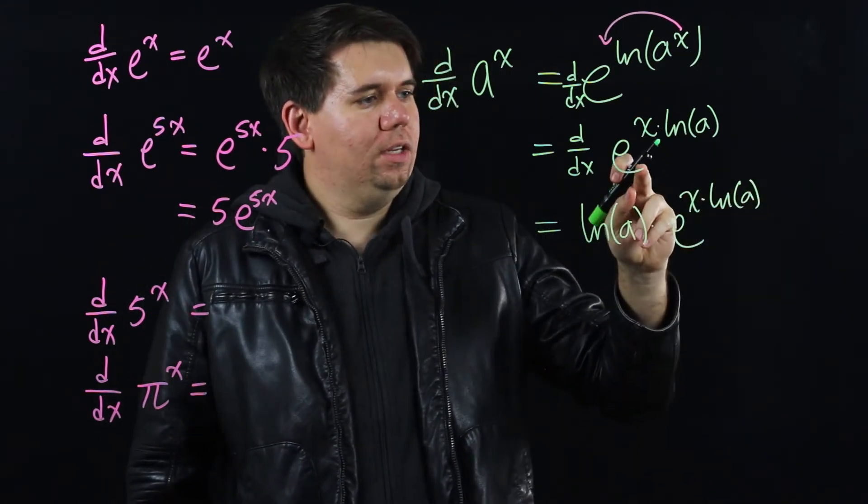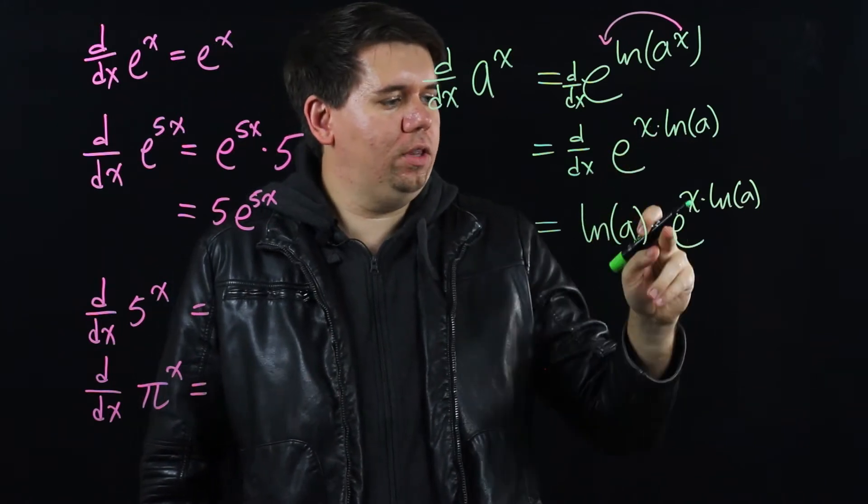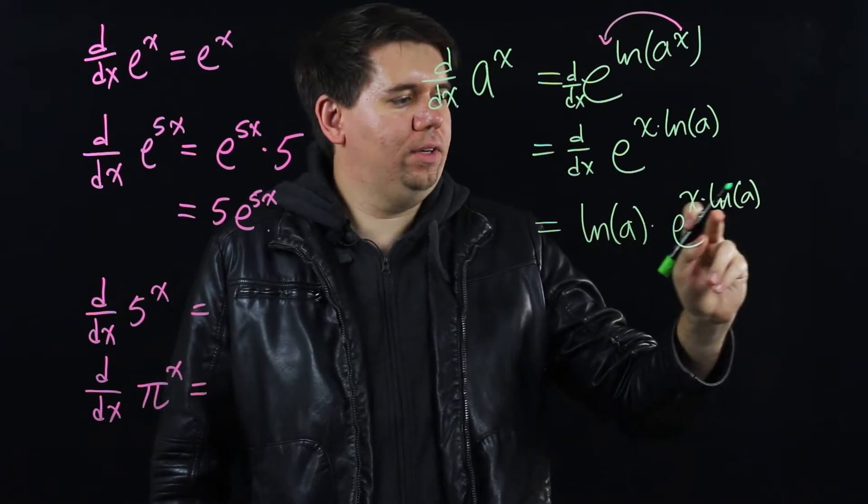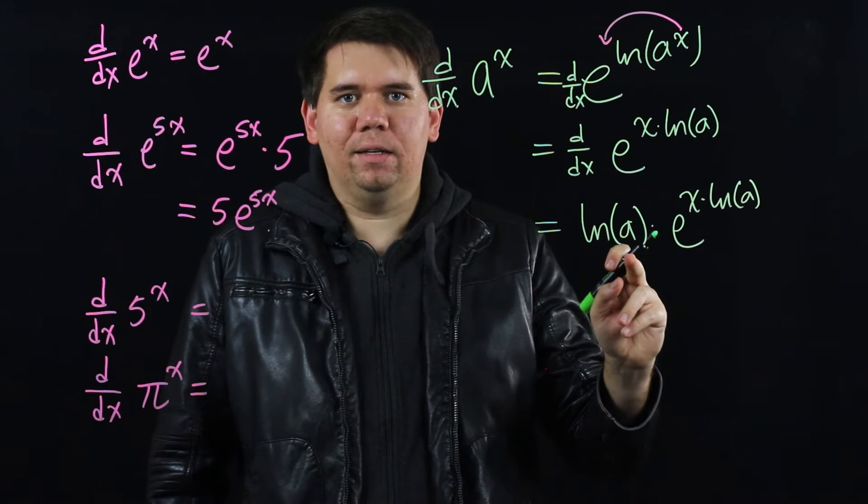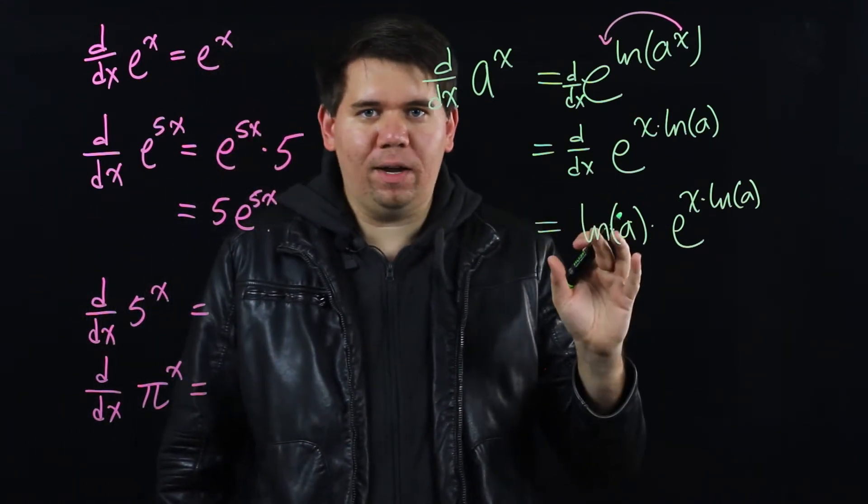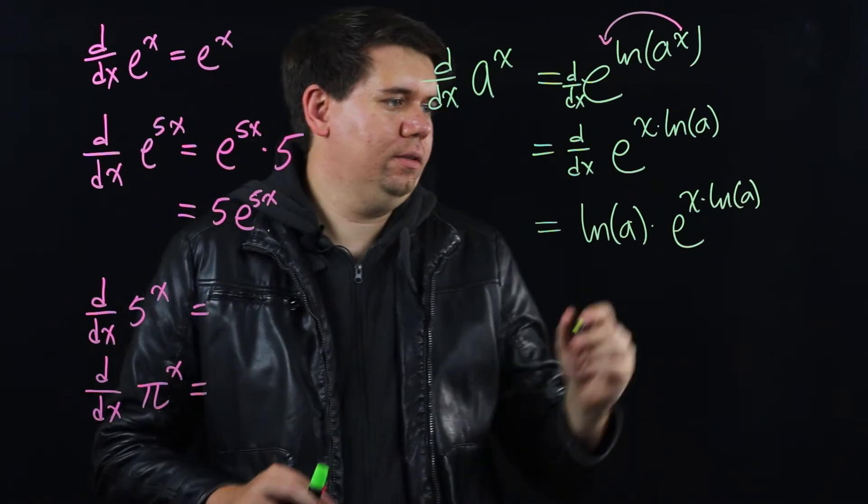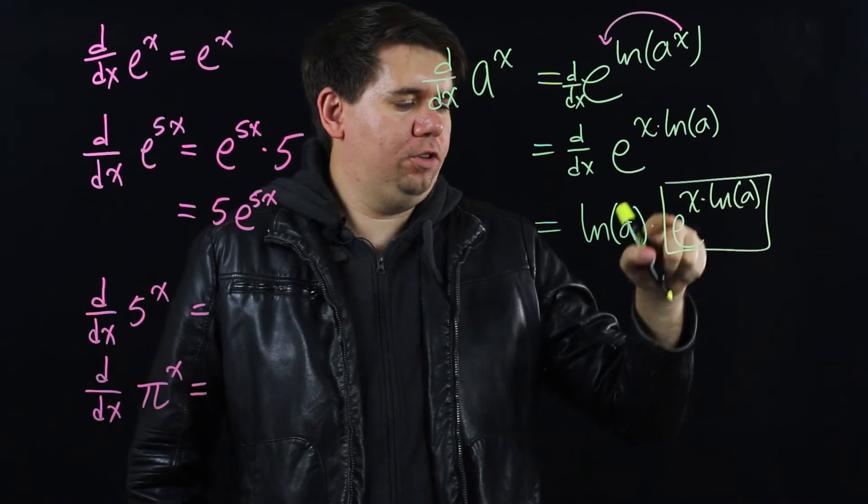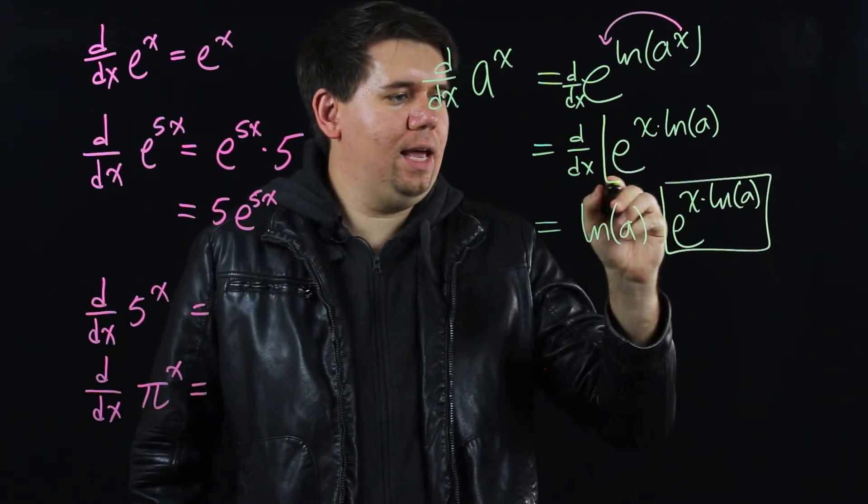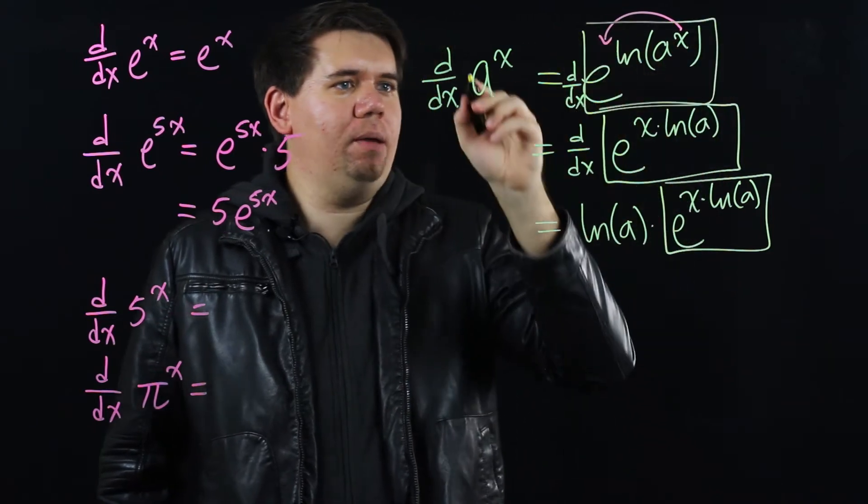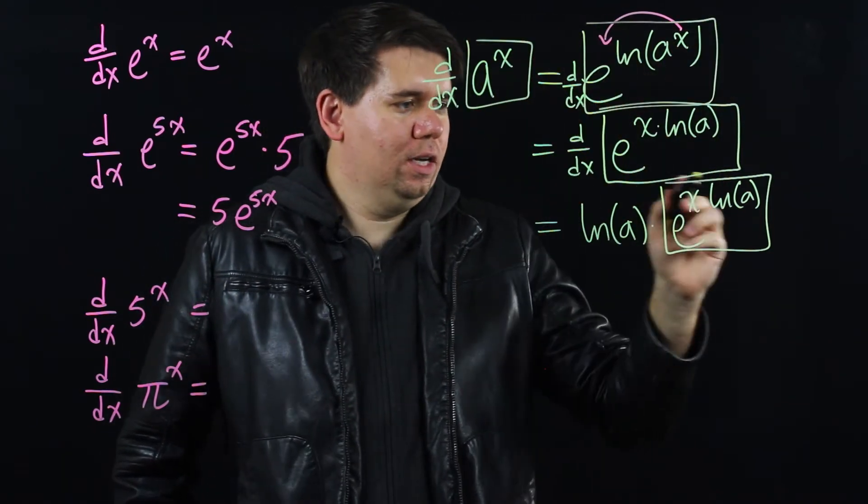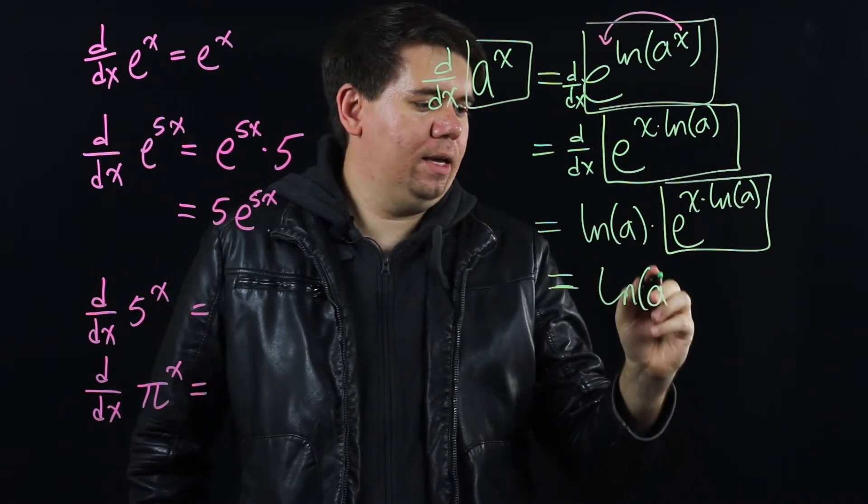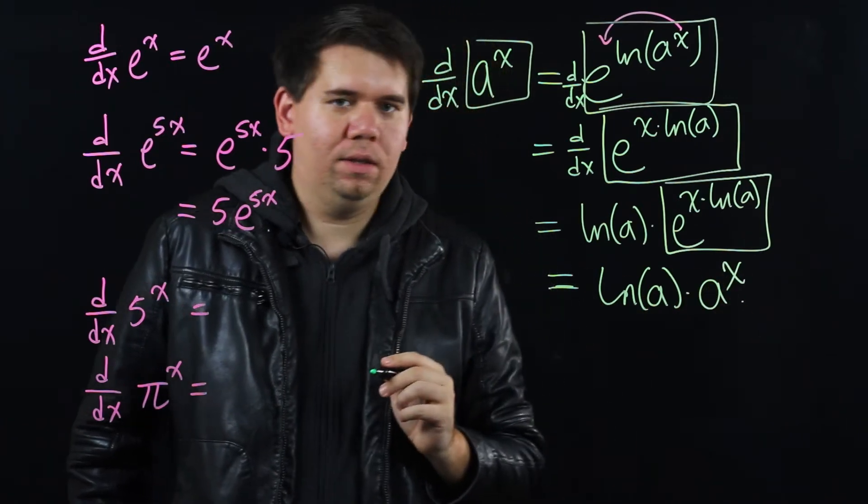By the chain rule you take the derivative of the outside function. So e to the becomes e to the. You leave it the same times the derivative of the inside function. The derivative of x times ln of a is just ln of a. But we can further simplify this. Notice this piece right here. x times ln of a as your exponent e to the x times ln of a is exactly what we had before. And that just came from a to the x. So this piece here is really just a to the x. So we end up with ln of a times a to the x.